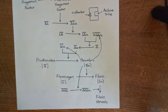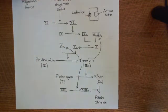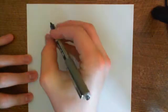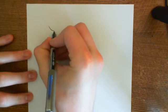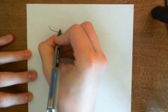This is the intrinsic coagulation cascade. Let's now look at the extrinsic coagulation cascade. The extrinsic coagulation cascade is activated by tissue factor rather than by collagen, so let's draw this picture again.